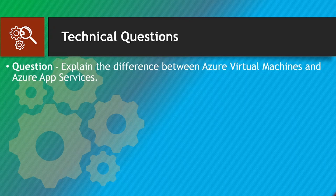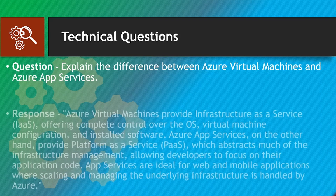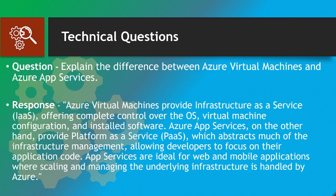Explain the difference between Azure Virtual Machines and Azure App Services. Azure Virtual Machines provide Infrastructure as a Service (IaaS). Azure App Services abstract much of the infrastructure management, allowing developers to focus on the application's code. App Services are ideal for web and mobile applications where scaling and managing the underlying infrastructure is handled by Azure.